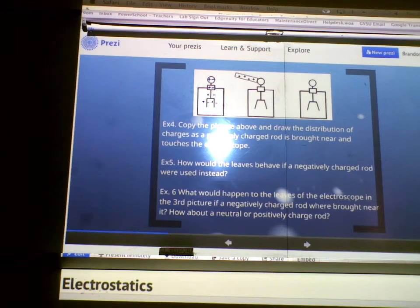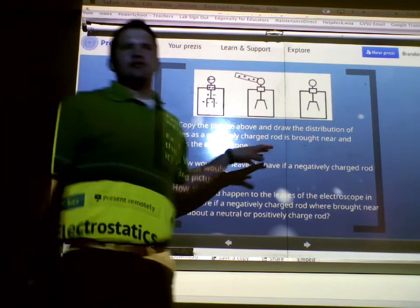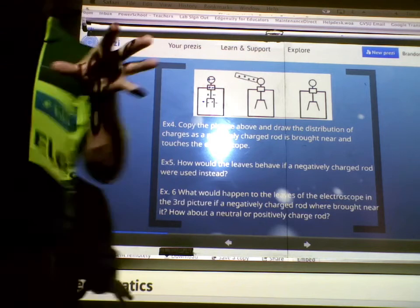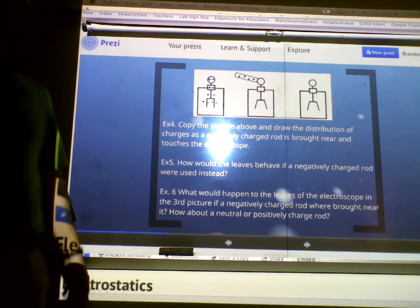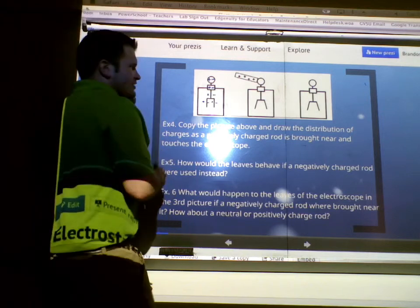All right, they spread out evenly because the protons don't like the protons, the electrons don't like the electrons. Right? So, when this positive rod is brought near the electroscope, what happens? Do all the positives run away? No, why not? They can't move. So, what happens? All the electrons move.